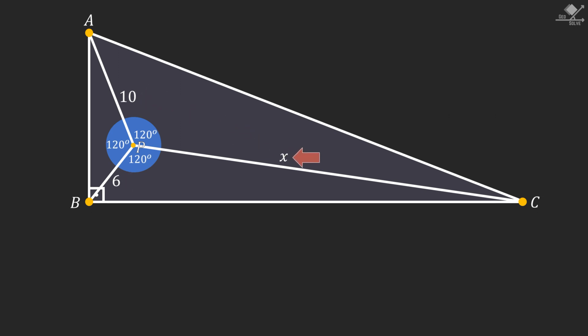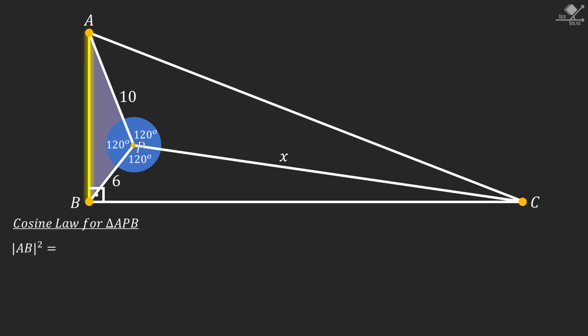Let's start our solution by applying law of cosines on triangle APB. We will apply cosine law for side AB, so start with AB squared. On the right side of the equation, we have the sum of the squares of the remaining two sides and subtract two times the multiplication of two sides times the cosine of the angle formed by them, which is 120 degrees.